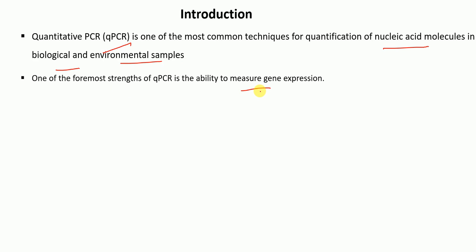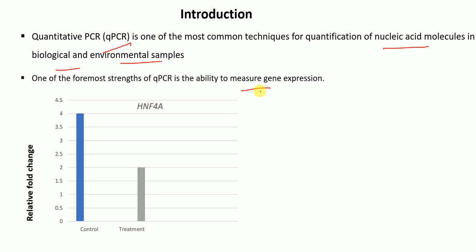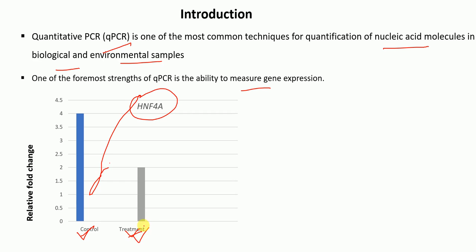We can use the QPCR technique to measure gene expression between a control and a treatment sample, as shown in this figure. The gene whose expression has been measured is SN4-alpha, and we have two kinds of samples: one is the control sample and the other is the treatment sample. The expression level of SN4-alpha is much lower in the treatment sample compared to the control sample. Hence, this QPCR experiment can be used to measure the expression difference between control and treatment groups.